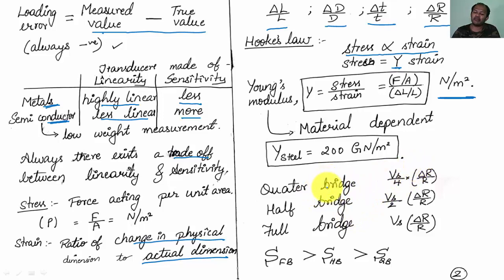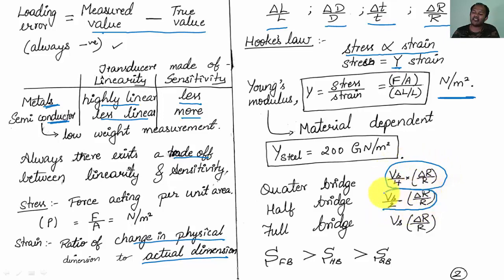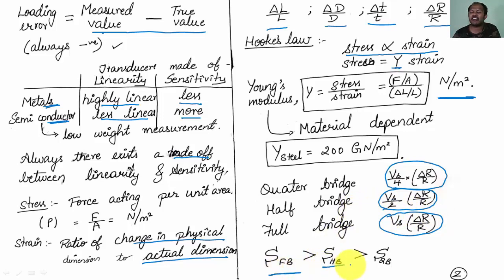For a quarter bridge, the bridge voltage V_bridge equals Vs/4 × (delta R / R). For a half bridge, it is Vs/2 × (delta R / R). For a full bridge, it is Vs × (delta R / R). Sensitivity of the full bridge is greater than sensitivity of the half bridge, which is greater than sensitivity of the quarter bridge. This sensitivity topic is very important for UGC NET exams.